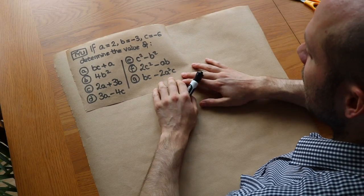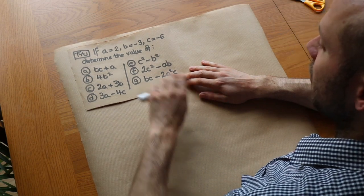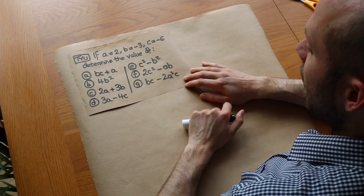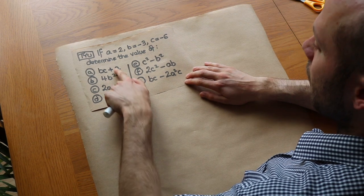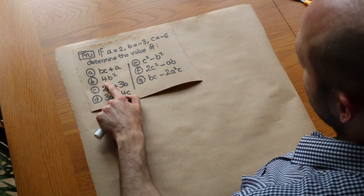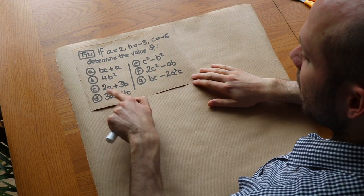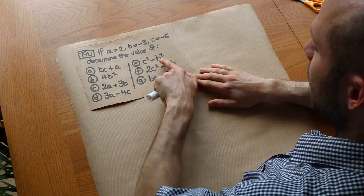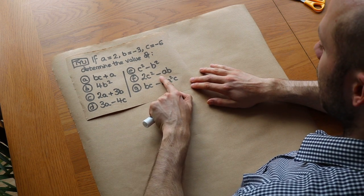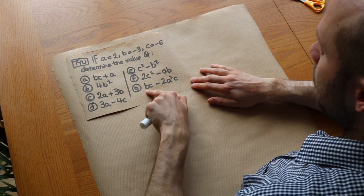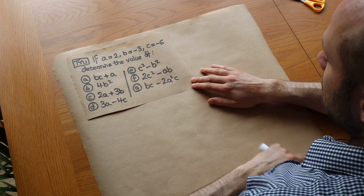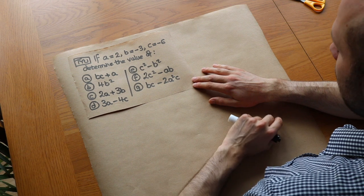As a final test, I want you to have a go at these questions. a is 2, b is minus 3, c is minus 6. Find the value of: bc plus a, 4b squared, 2a plus 3b, 3a minus 4c, c squared minus b squared, 2c squared minus ab, and a super difficult one: bc minus 2a squared c. You may want to pause the video and have a go at these.